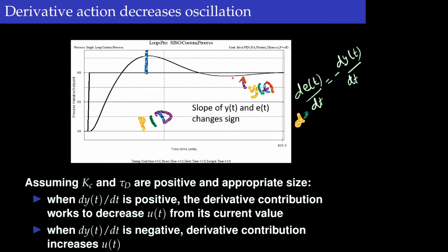Why does the process oscillate under integral control? The integral control keeps on adding control action because it is summing up all the error terms. The integral action keeps on increasing even as the process is reaching the set point. When dy/dt is positive, the derivative contribution decreases u(t). Up to a certain point the integral action keeps summing up while the derivative action is decreasing the control action. After the process goes beyond the set point, the area is negative so the integral action starts decreasing, and the derivative action also decreases.